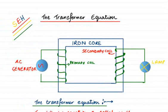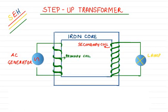Moving to the next section: the step-up transformer. The word 'step up' means to increase the voltage. In a step-up transformer, the secondary coil has more turns than the primary coil. Because the number of turns is greater in the secondary coil, there will be a higher voltage in the secondary. So a step-up transformer always has the voltage of the secondary greater than the voltage of the primary. The construction — soft iron core, AC input, primary coil, secondary coil, and output lamp — remains the same.